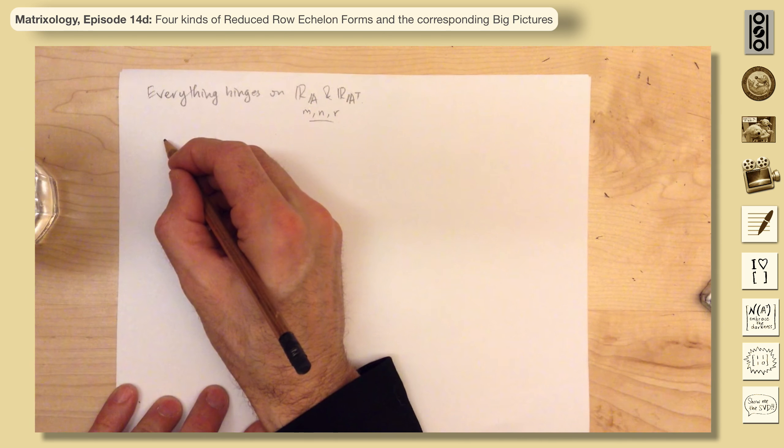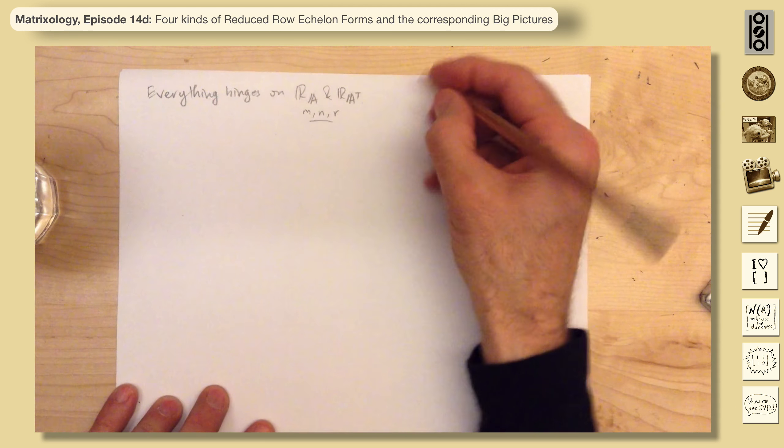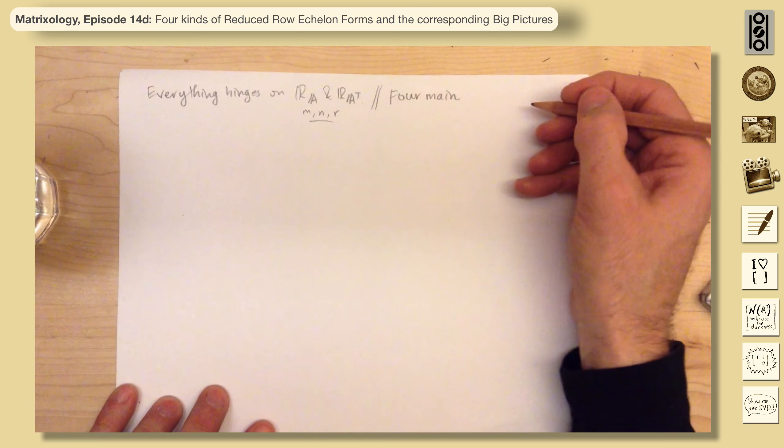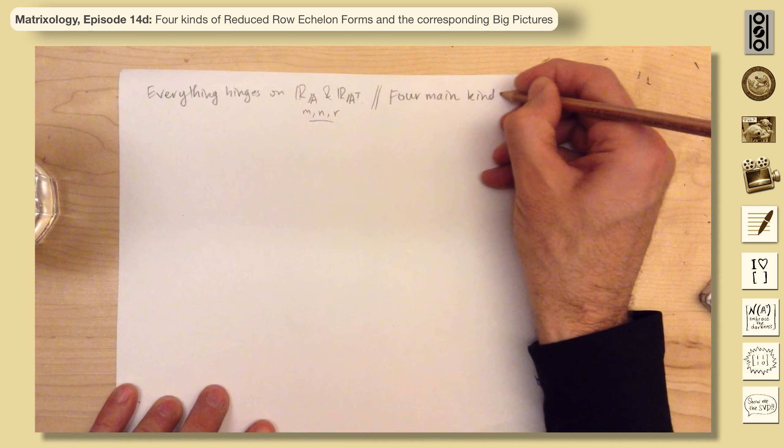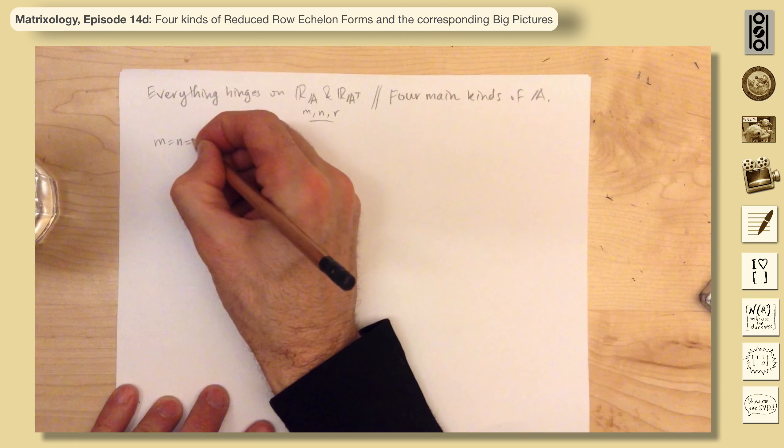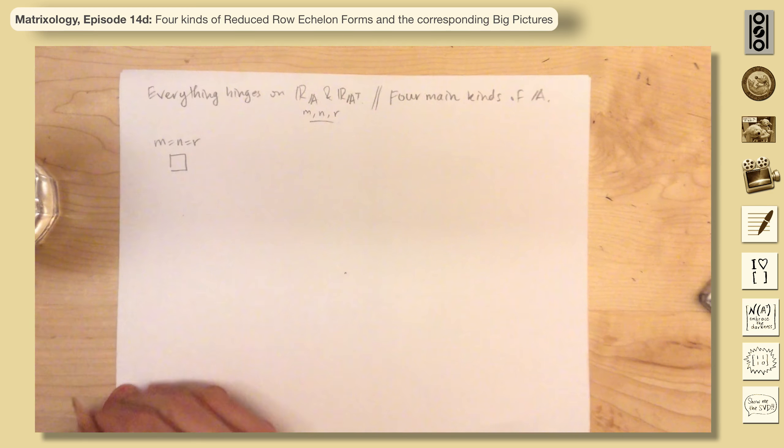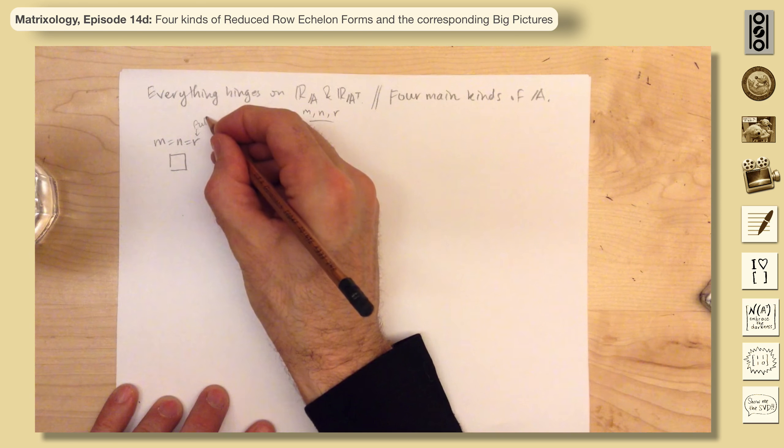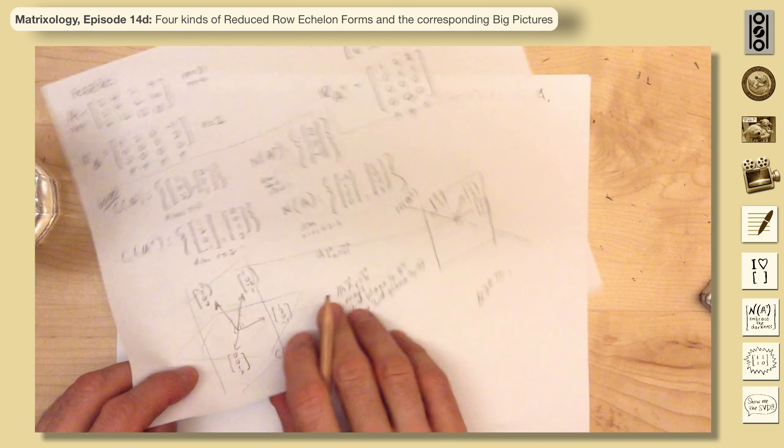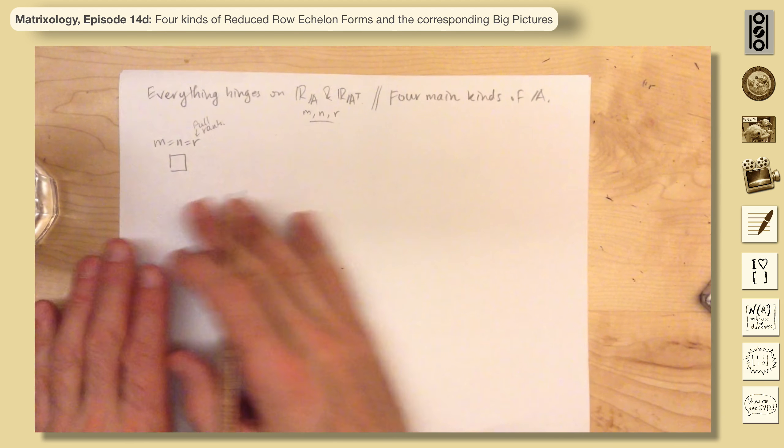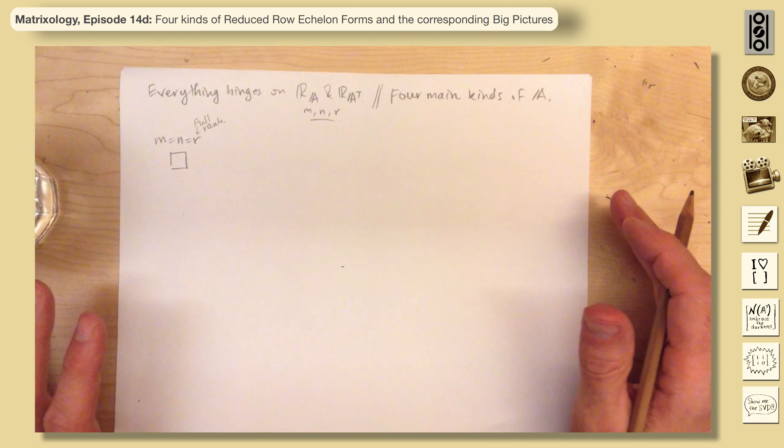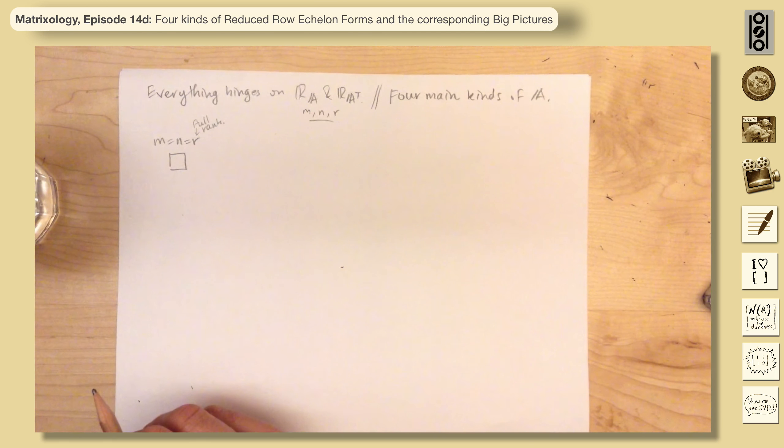The first thing would be there are four main kinds of A. There are these very nice ones where M equals N equals R. It's a square matrix, and it's full rank. You call this full rank. And these are the kind of matrices where there's none of this business anymore. Two dimensions get sent to two dimensions. Every X over here gets sent to a B. There's no null space. You can go back. It's invertible. These are invertible matrices.